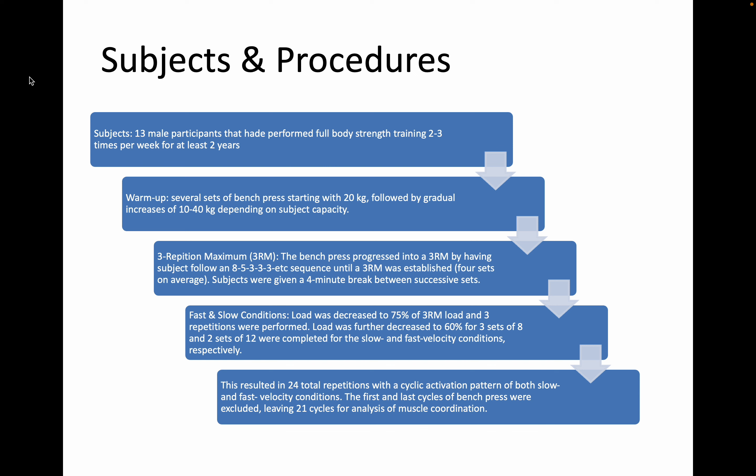The average three-rep max came out to about 225 pounds. Participants received four-minute breaks between successive sets. For the fast and slow conditions, the load was brought down to 75% of their three-rep max and three reps were performed for the slow condition. The load was further decreased to 60%, and they did three sets of eight and two sets of twelve for both the slow and fast velocity conditions.